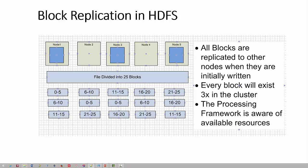If three processes need to read blocks 0 to 5 at the same time, the YARN processing framework can send those three processes to different nodes in the cluster — for example, to node 1, node 3, and node 5. Each of the three processes reads data from a different physical hard disk on a different computer, taking advantage of distributed memory and distributing the processor load.